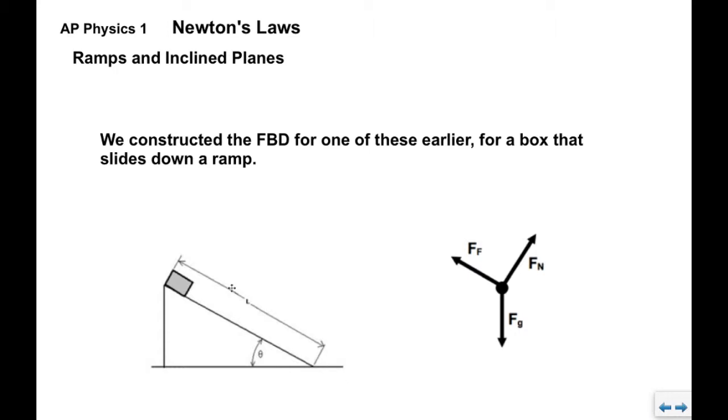We did the free body diagram for our box on a ramp earlier. We have FG straight down as usual, we have force friction acting to oppose the motion which is down the ramp, and we have FN, the normal force, which acts perpendicular and outward from the surface.